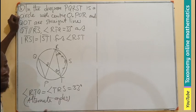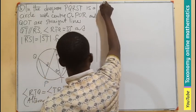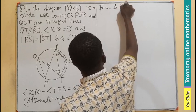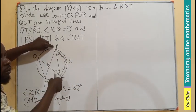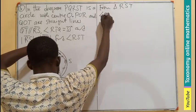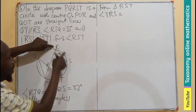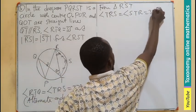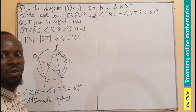From triangle RST, which is isosceles with RS equals ST, the two base angles are equal. Therefore angle TRS equals angle STR, both equal to 33 degrees, because they are the base angles of an isosceles triangle.